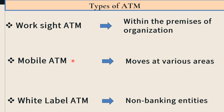The next type of ATM is Mobile ATM, also known as ATM on wheels. This is the type of ATM which moves from one place to another and operates at various areas and places. That is why this ATM is known as Mobile ATM. In India, ICICI is the first bank which introduced this type of mobile ATM.